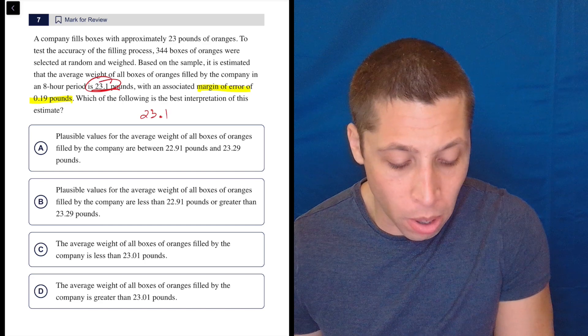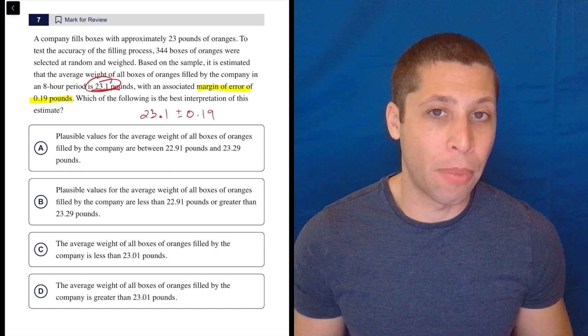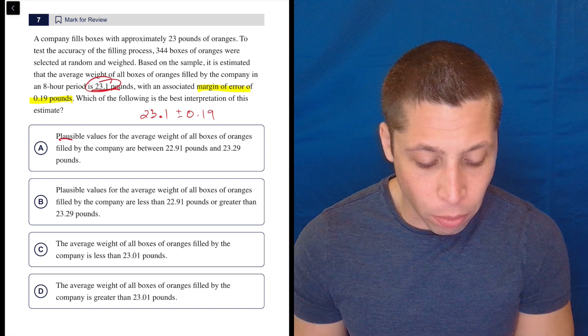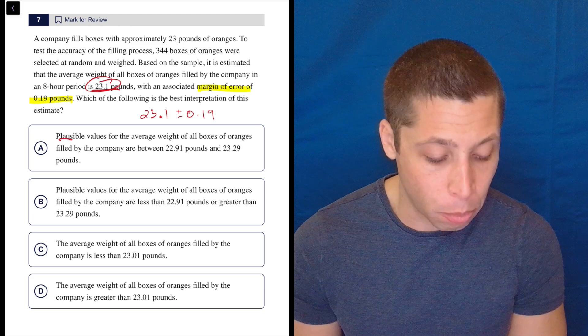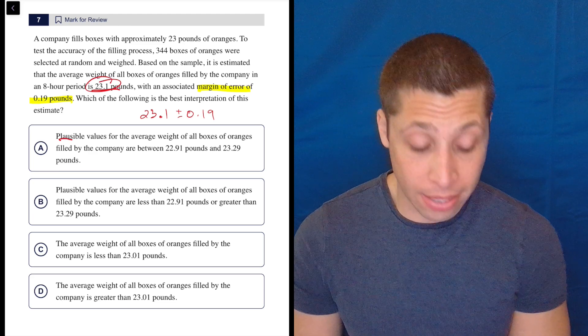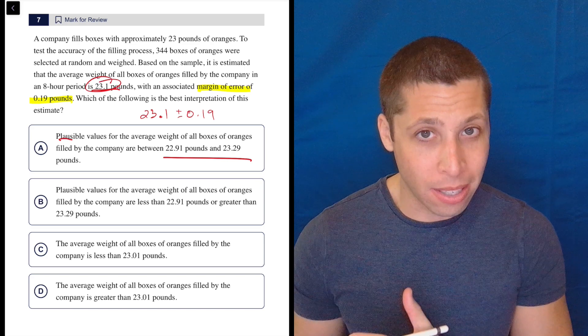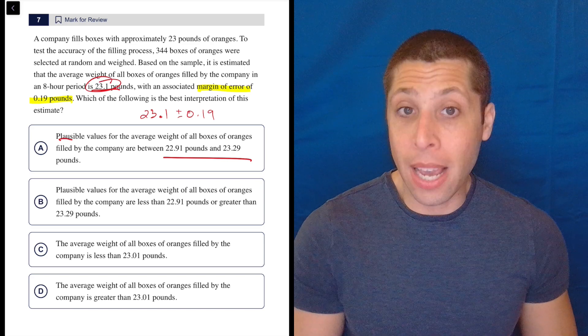So A, plausible values for the average weight of all boxes of oranges filled by the company are between 22.91 pounds and 23.29 pounds. Now, if this is the SAT, I'm not going to actually add and subtract 0.19 to figure out if that's right. I'm just going to be like, yeah, that seems like good numbers. Let's just keep it in.